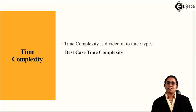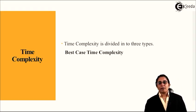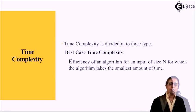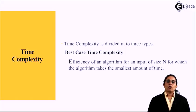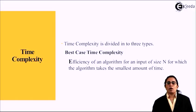The first one is the best case time complexity. Efficiency of an algorithm for an input of size n for which the algorithm takes the smallest amount of time.